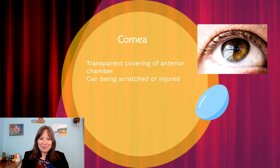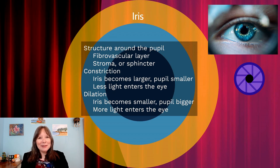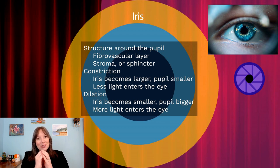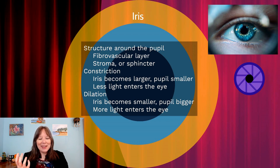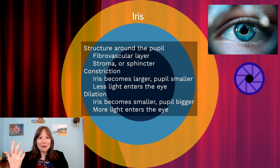Behind the cornea is the part people refer to when they talk about eye color — we're really talking about the color of the iris. The iris is a fascinating structure made up of layers including a fibrovascular layer and the stroma, which acts as a sphincter that can open and close. When the iris constricts, the pupil becomes smaller and the iris becomes more noticeable, which is when you can really see someone's blue, green, or brown eye color.